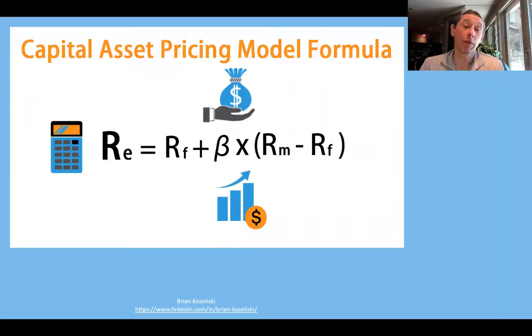If you recall, the formula for CAPM says that the expected return for an asset is equal to the risk-free rate plus beta times the market risk premium, which is the expected return for the market minus the risk-free rate.